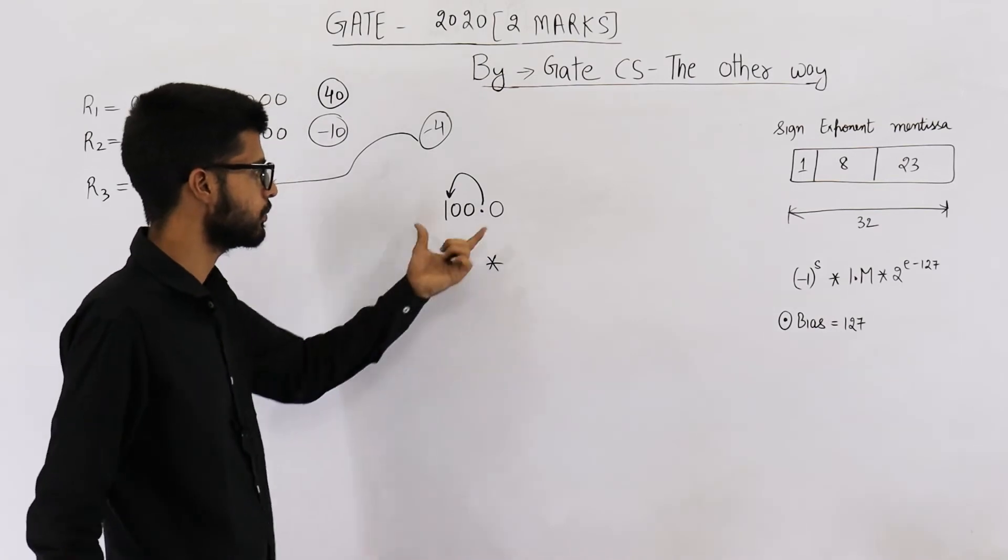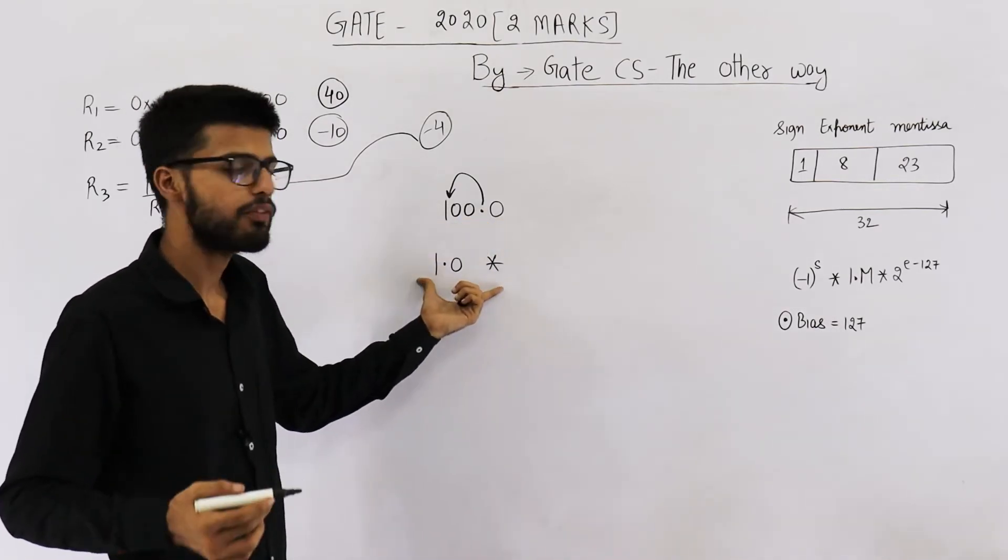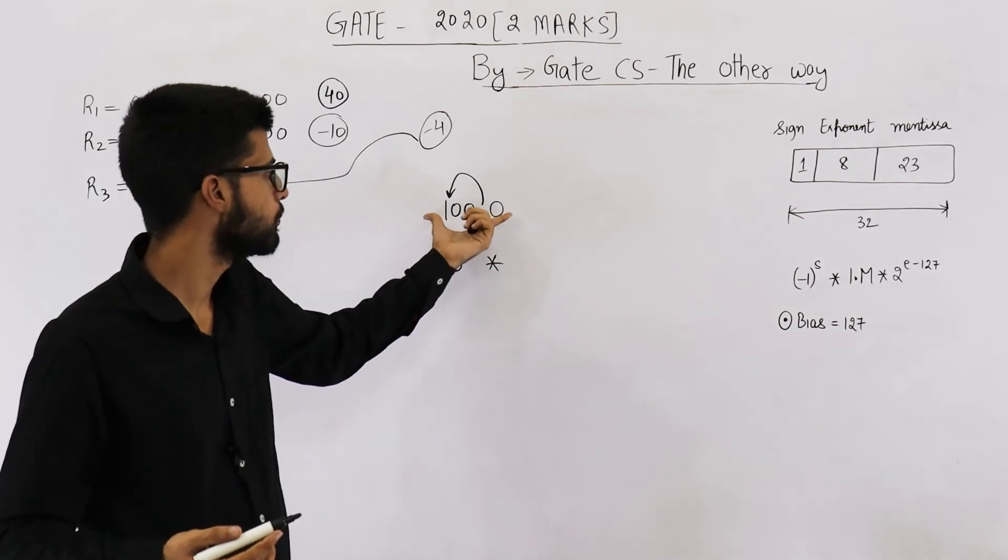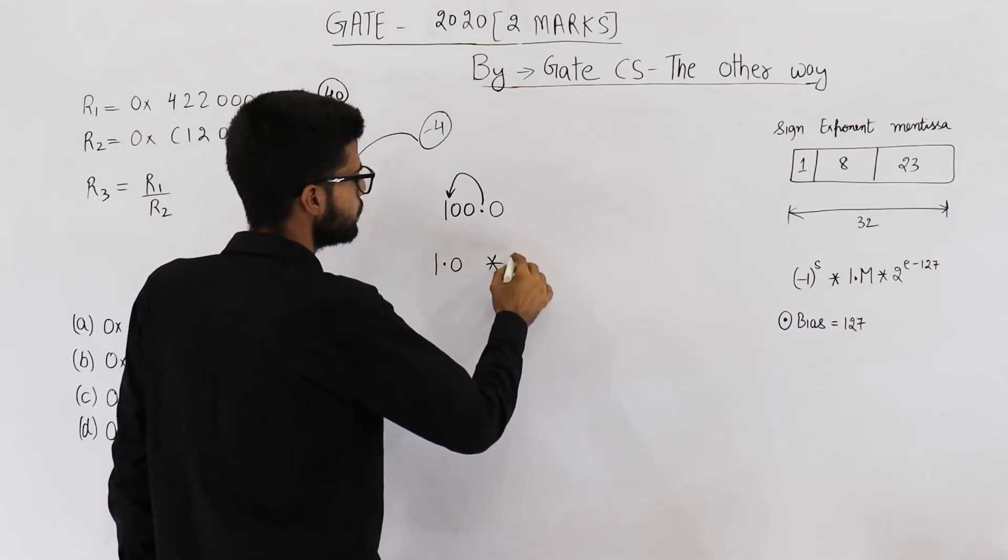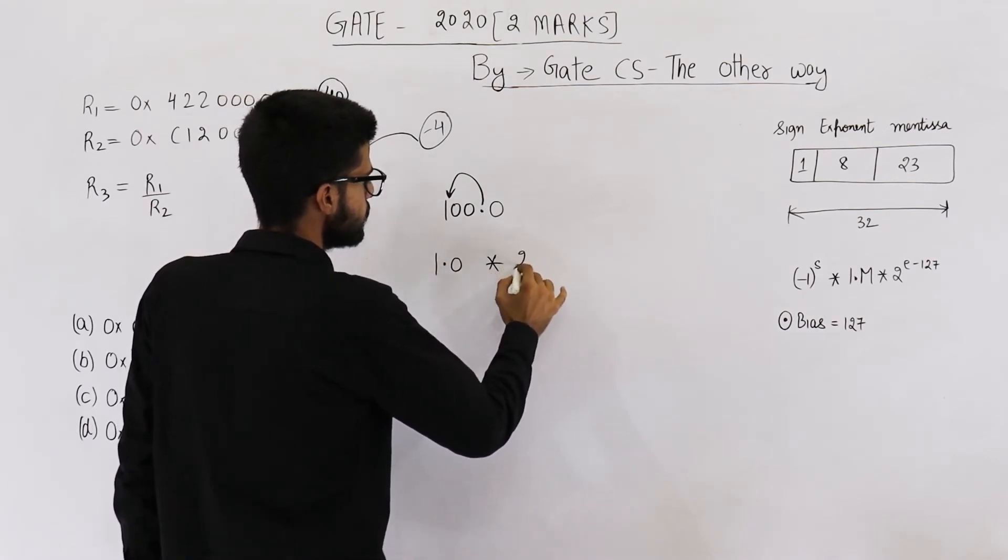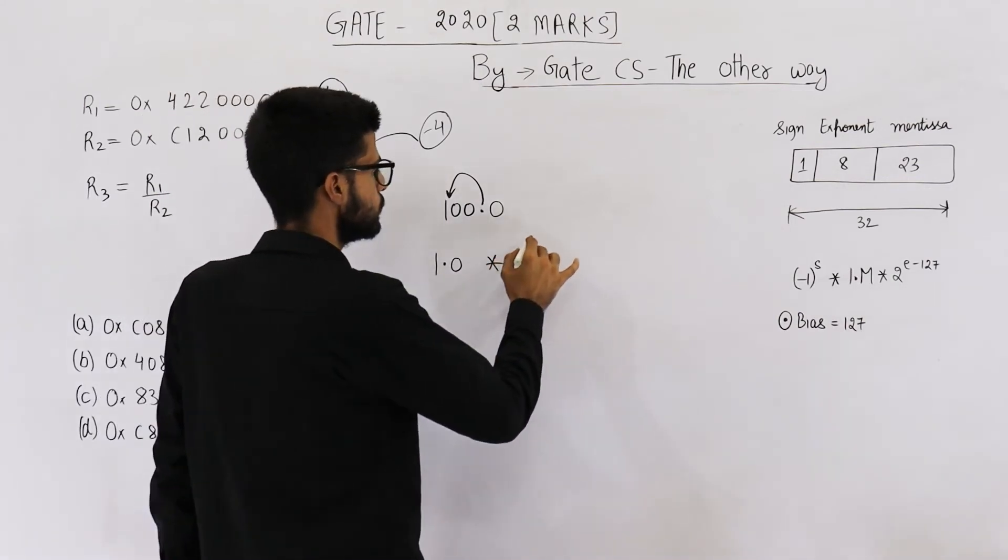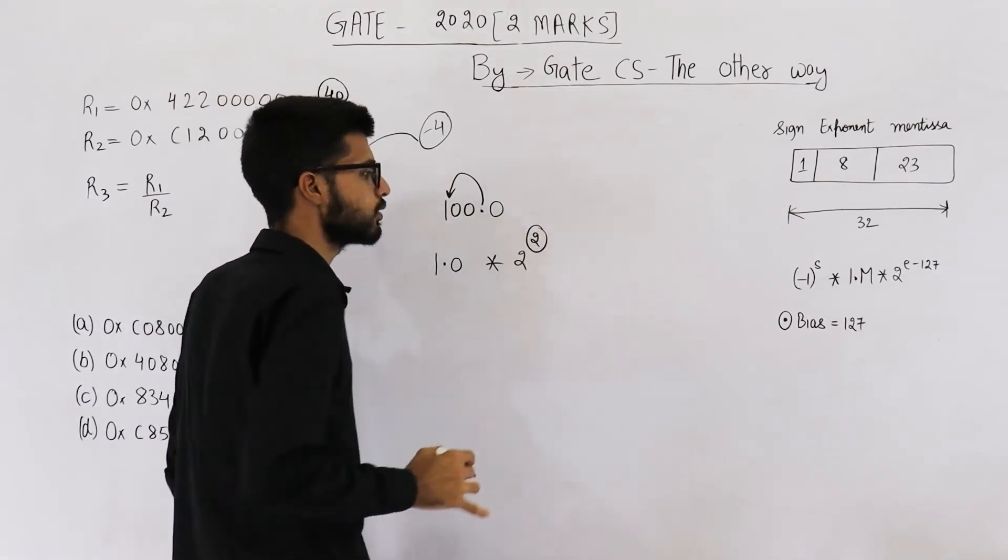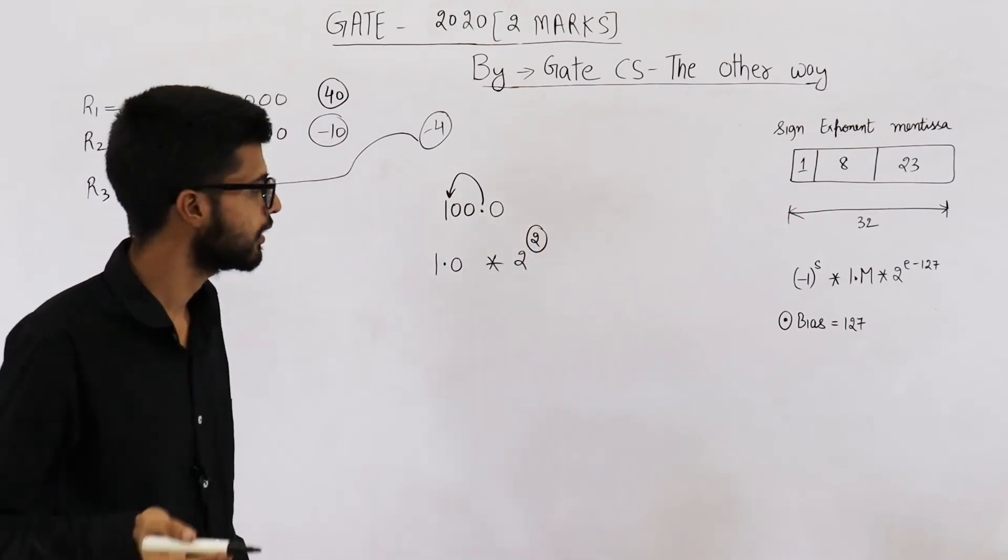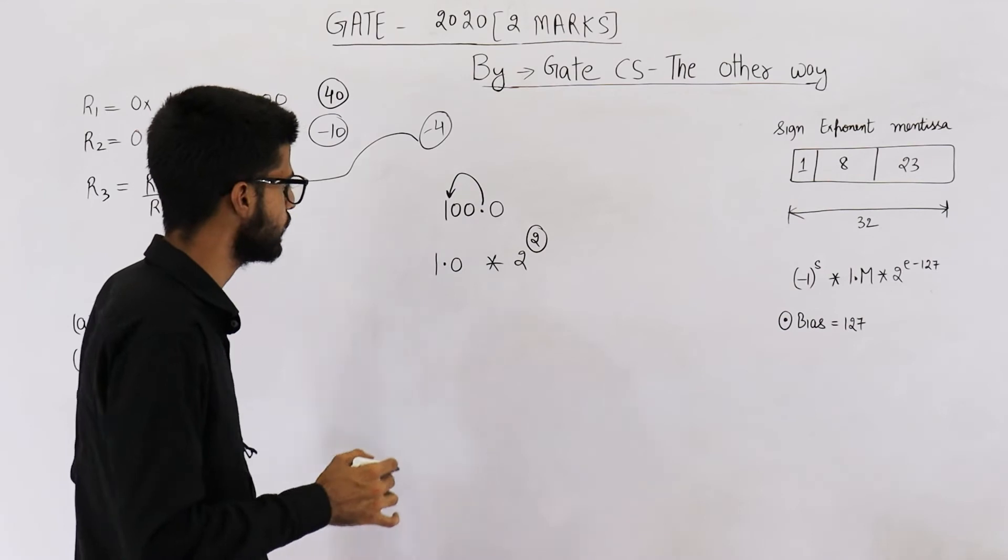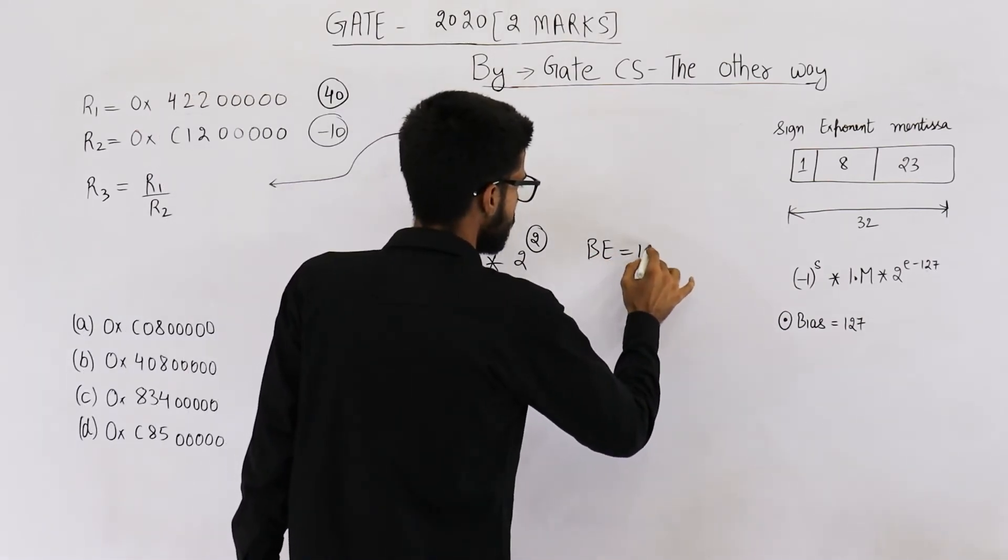So it will be 1.0, and because by shifting the decimal point to left we are actually dividing the number, now we have to multiply this number to compensate. So it is multiplied by 2 raised to the power 2. Actual exponent is 2. What will be the biased exponent? It is 2 plus 127 which is 129.